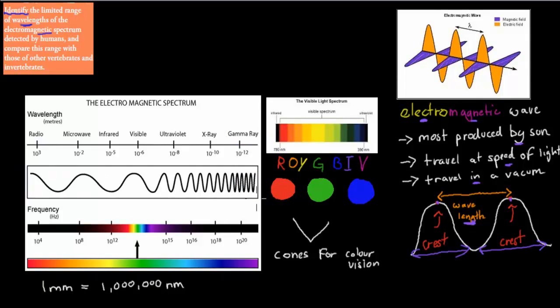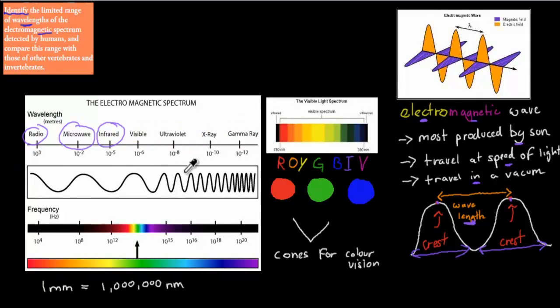Most of these we would have heard before: radio, microwave, infrared, visible, ultraviolet, X-ray, and gamma ray. Most of you should be somewhat familiar, at least in terms of the words and names. The thing we're going to focus on is the visible spectrum, which would be right here.